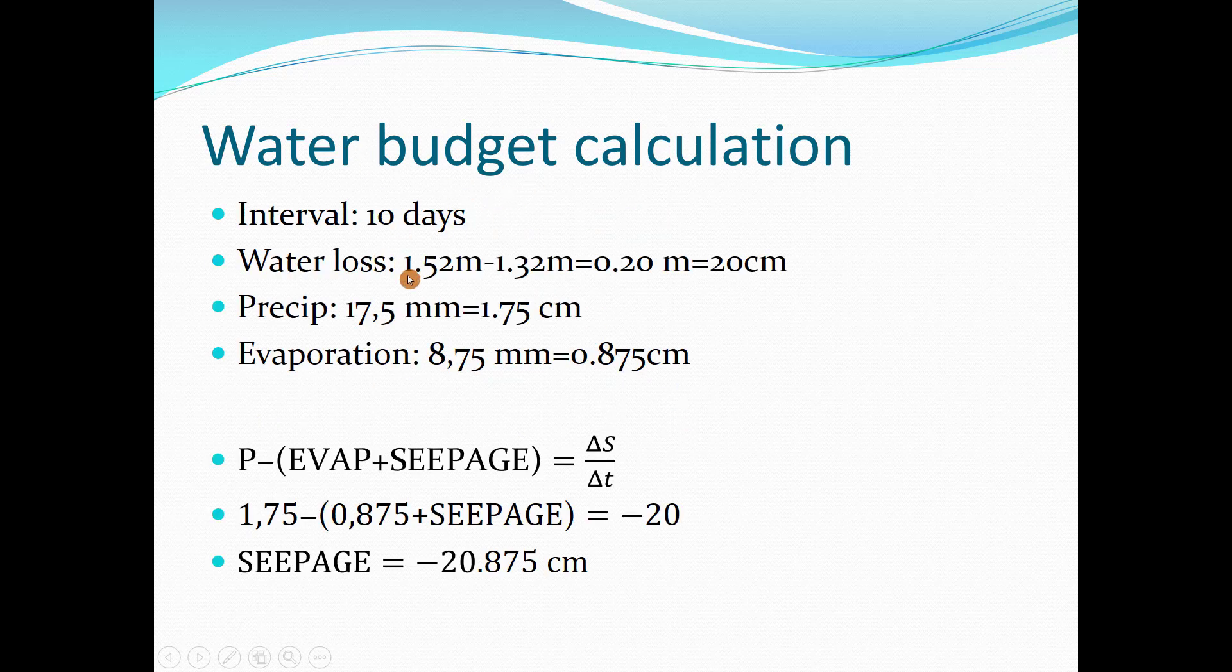We have 10 days and water loss, the change in height, is 1.52 meters minus 1.32 meters equals 0.2 meters, which equals 20 centimeters. The summation of precipitation is 1.75 centimeters. Summation of evaporation is 0.875 centimeters. If we put that data in the equation: precipitation minus evaporation plus seepage equals change of storage.